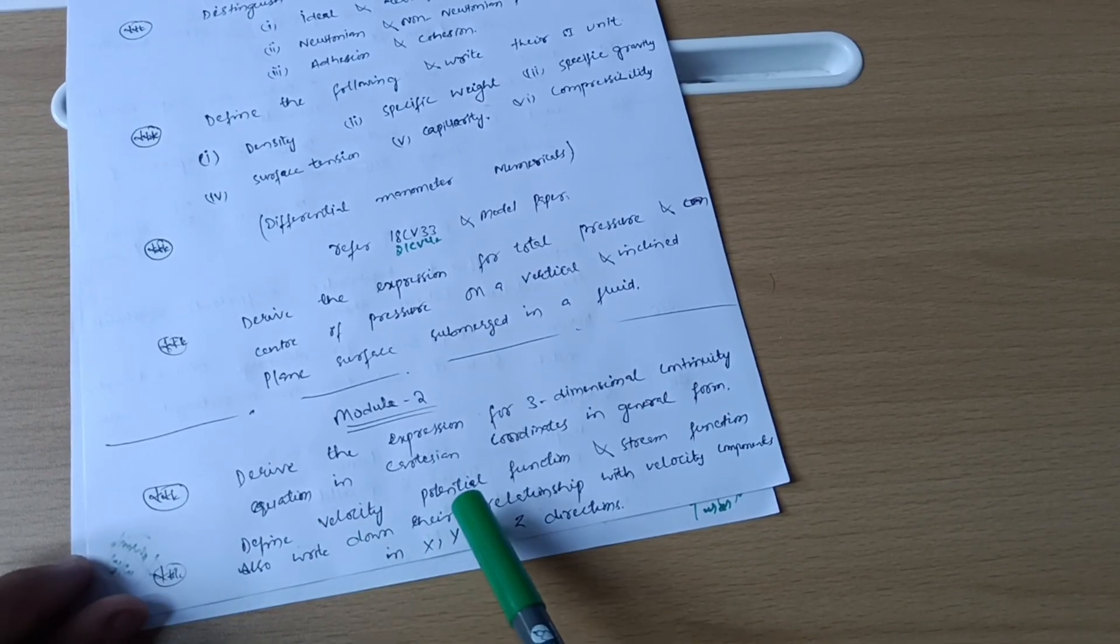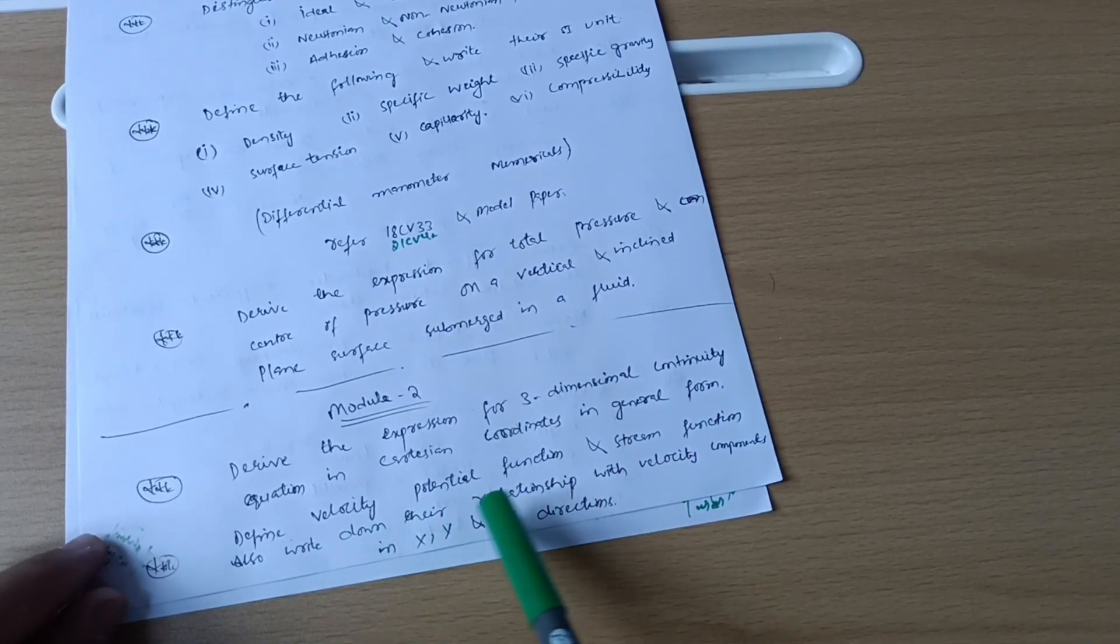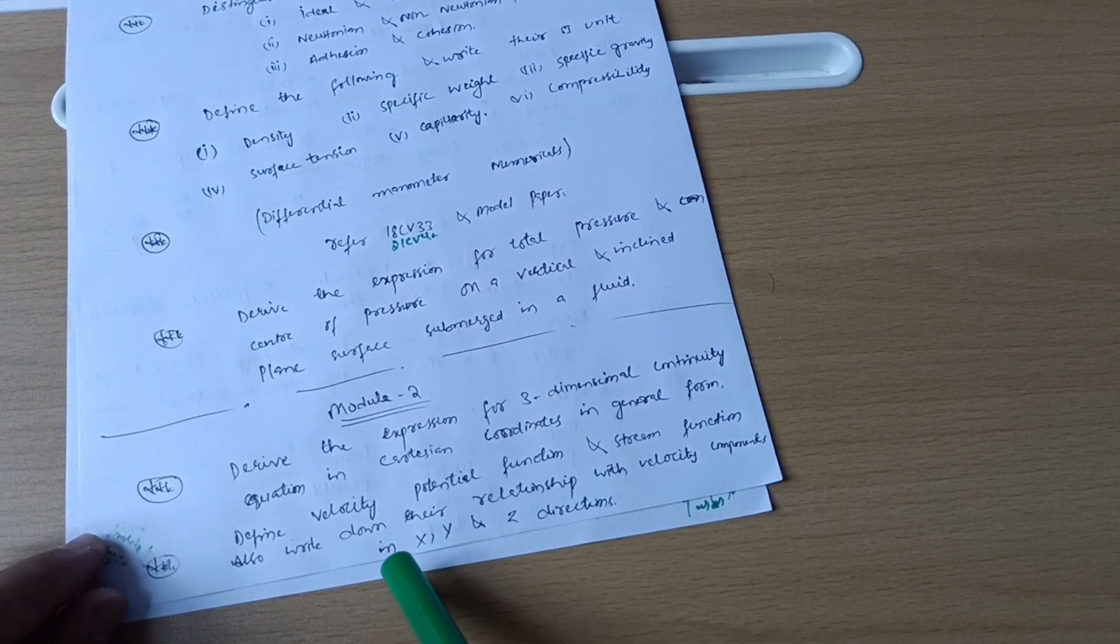Next is define velocity potential function and stream function, also write down their relationship with velocity components in x, y, and z directions.